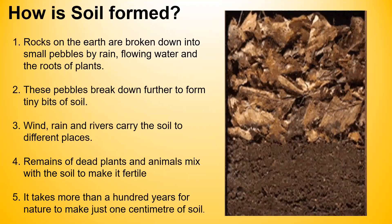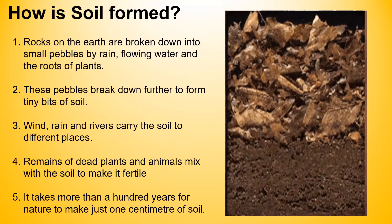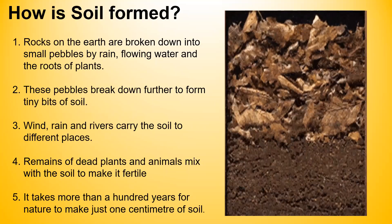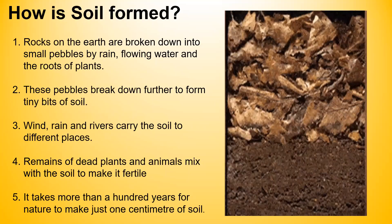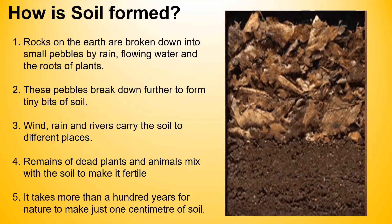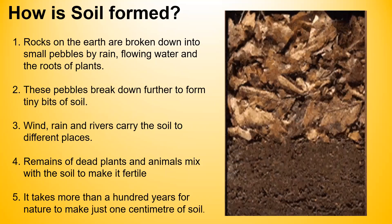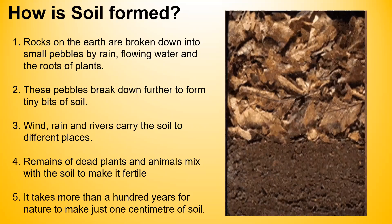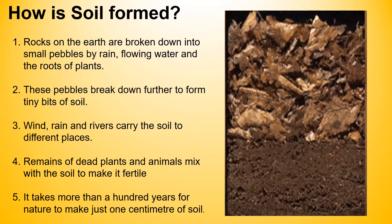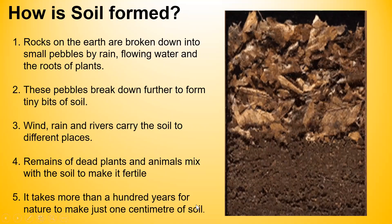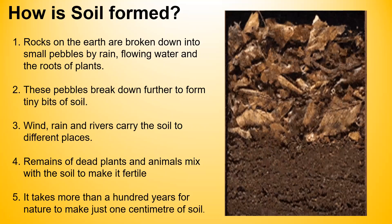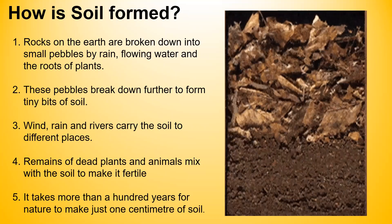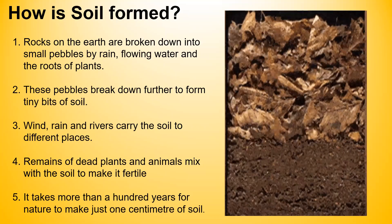Let's see how soil is formed. Rocks on the earth are broken down into small pebbles by rain, flowing water and the roots of plants. These pebbles break down further to form tiny bits of soil. Wind, rain and rivers carry the soil to different places. Remains of dead plants and animals mix with the soil to make it more fertile. It takes more than a hundred years for nature to make just one centimeter of soil — a natural process taking hundreds, even millions of years.